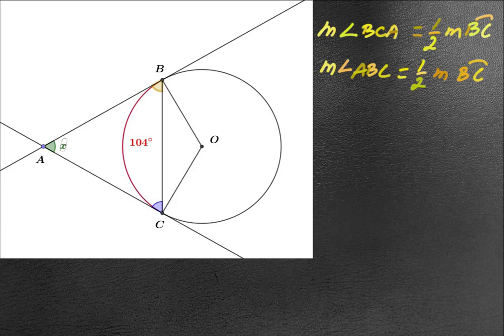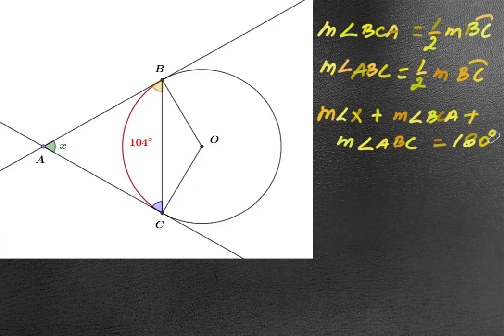triangle ABC, the sum of the angles are 180 degrees. So we can say that measure of X plus measure of angle BCA plus measure of angle ABC is equal to 180 degrees. Now we can